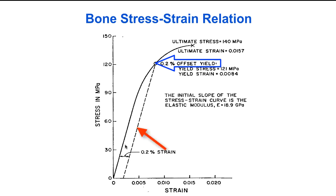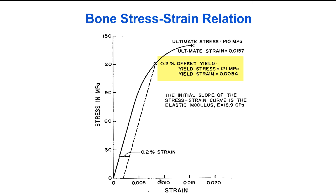For bone, as in many other materials, engineers often use a convention called the 0.2% offset yield as a way of estimating the yield point. A straight line parallel to the linear portion of the curve is drawn with an offset of 0.2% on the strain axis, and where that line intersects the stress-strain curve defines the yield point. In this experiment, the yield stress was 121 MPa and the yield strain was 0.84%.